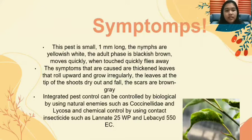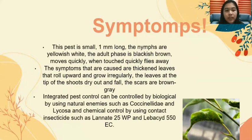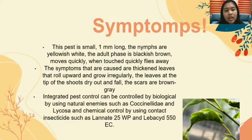The second pest is Thrips. The pest body is very small, one millimeter long. The nymphs are yellowish white and the adult face is blackish brown. It moves quickly and flies away when touched. The symptoms caused are thickened leaves that roll upward and grow irregularly. The leaves at the tips of shoots dry up and fall. The scars are brown-gray. Integrated pest control can be done biologically by using natural enemies such as Coccinella and Chrysopa, and chemically by using contact insecticides such as Lannate 25WT and Vibisid 550 EC.